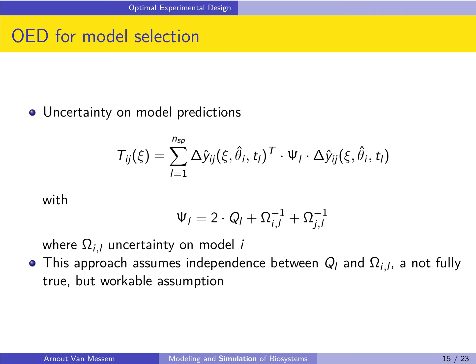And then next, we also need to take into account the uncertainty on the model predictions. Uncertainty on the model predictions is usually indicated by a confidence interval around a model prediction. What we do now is we update the weight matrix, so we replace Q_L by Ψ_L. And then Ψ_L, this is our new weight matrix, is 2·Q_L + Ω_{i,l}⁻¹ + Ω_{j,l}⁻¹. Omega, so Ω_i and Ω_j are certain matrices which correspond to the uncertainty for model i or model j respectively. This gives us our updated objective function, which then needs to be maximized. The approach assumes that the matrices Q_L and Ω_i and Ω_j are independent. This is in reality not fully true, but it is a workable assumption, so we can assume that this is true even though there might be some small dependence between the different matrices.